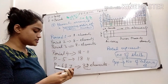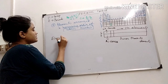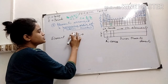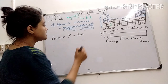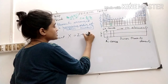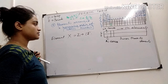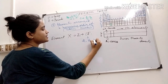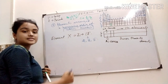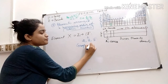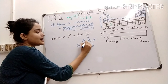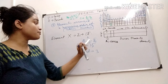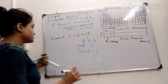So for any element — suppose element A has atomic number Z equal to 15. If I write the configuration, it is 2, 8, 5. So it has 5 valence electrons, so it is present in group 15. It has 3 shells — K, L, M — so period 3. This is the position of element X.